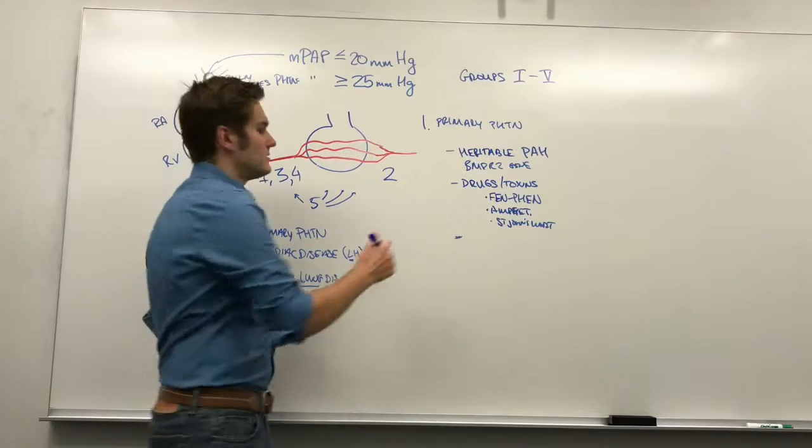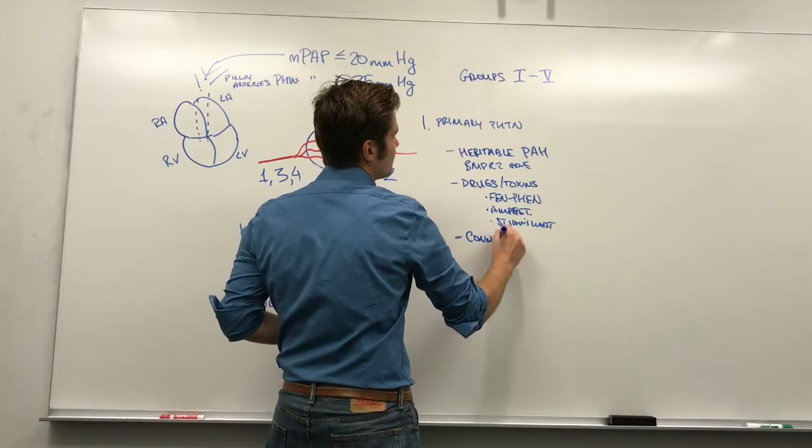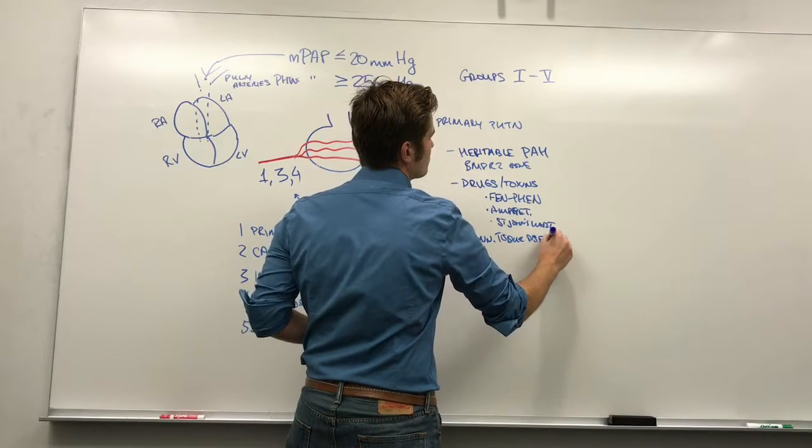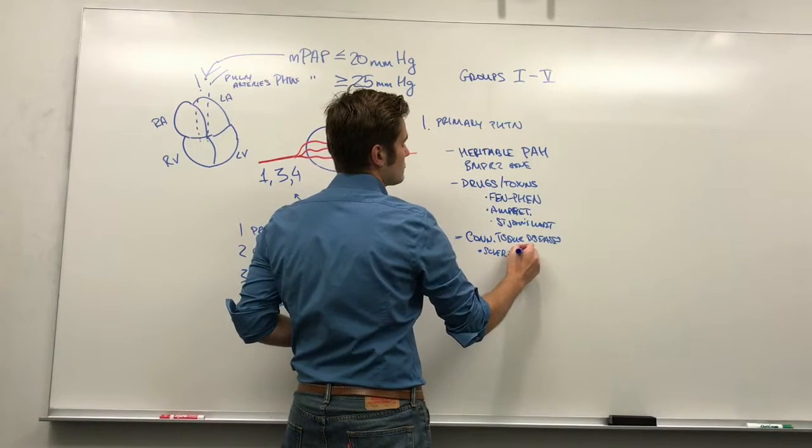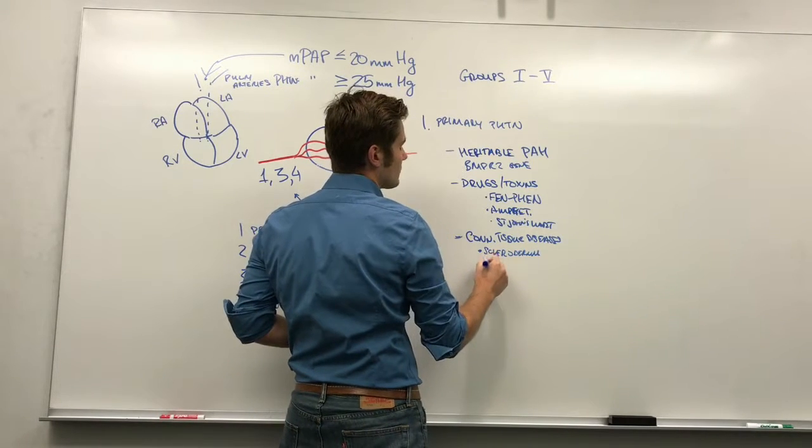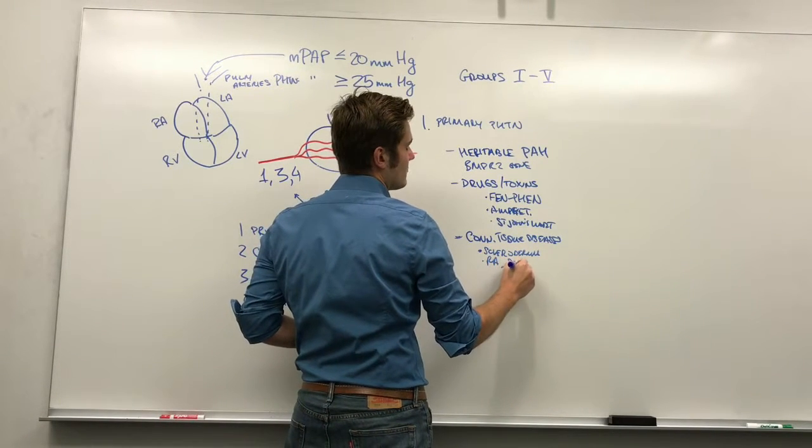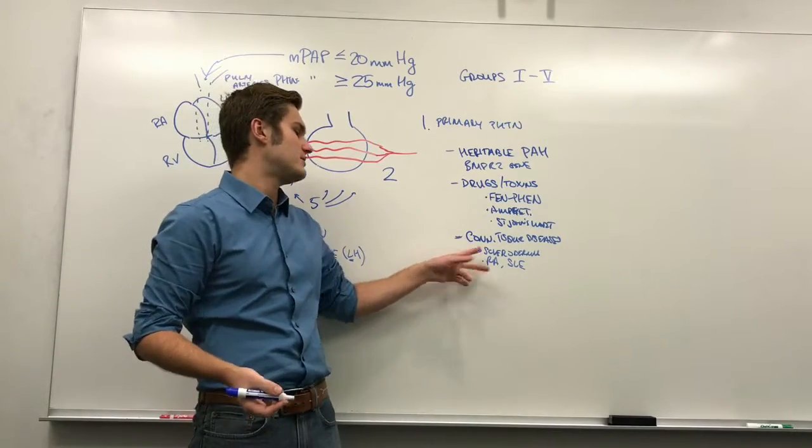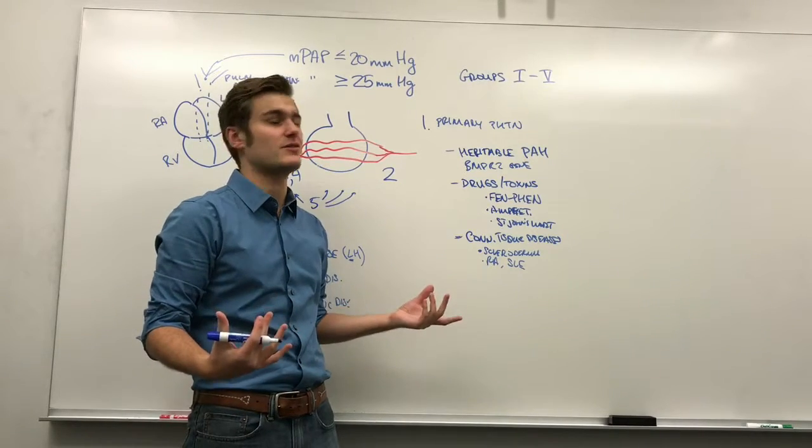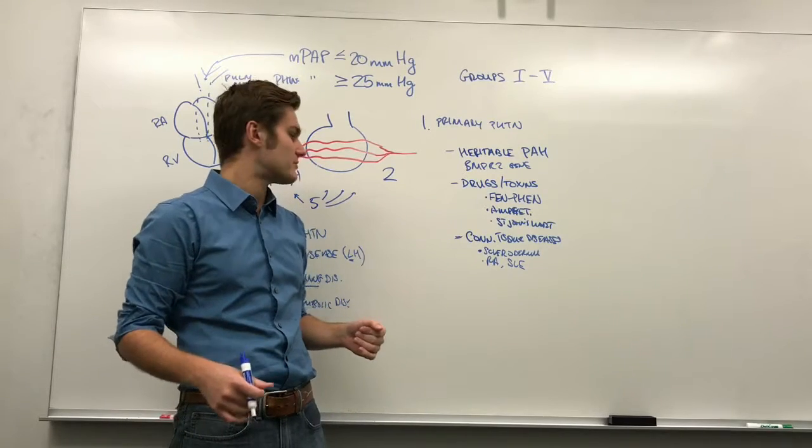What else? Next is connective tissue diseases. These are big diseases such as scleroderma. But also rheumatoid arthritis and SLE can cause this. So, the pathogenesis of this is that these connective tissue diseases cause fibrosis and hardening of the vessels themselves, which causes increased pressures to develop in these arteries.